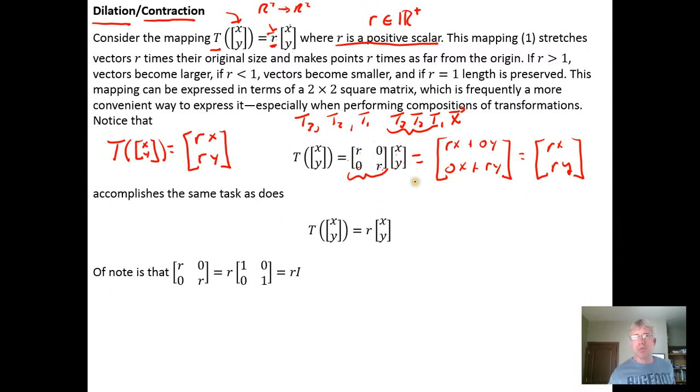This matrix either dilates or contracts, depending on the value of R, vectors from R2, sending them from R2 to R2. We want to also notice that we could factor the R off of this transformation vector, and we wind up with the 2x2 identity matrix here. The columns of this matrix actually form a basis for two-dimensional space.